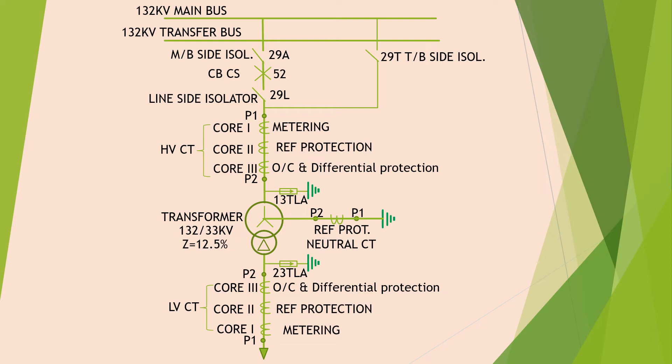The CT ratio of the HV side and the CT ratio of the neutral CT must be the same. Please watch the polarity of all CTs — the P2 terminal of all CTs is connected at the transformer side. Please watch in detail the CT core distribution.